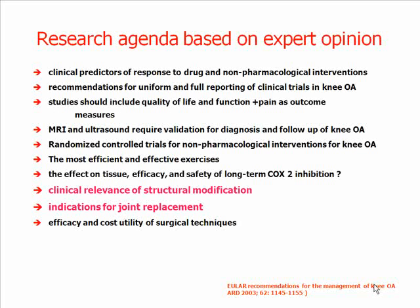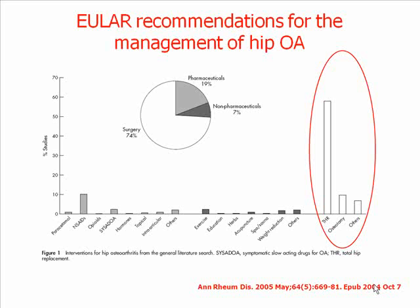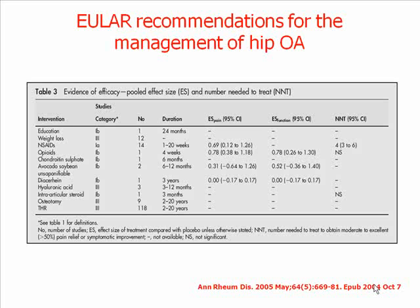We also formulated a research agenda dealing with issues of structural modifications and the critical question of when to perform joint replacement in those patients. The same procedure was applied for hip osteoarthritis, but the treatment modalities were very highly predominated by surgical ones, including total hip joint replacement and osteotomy, with smaller evidence for all other therapeutic interventions.